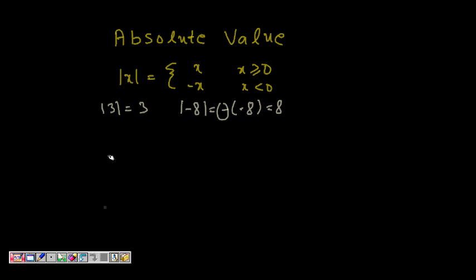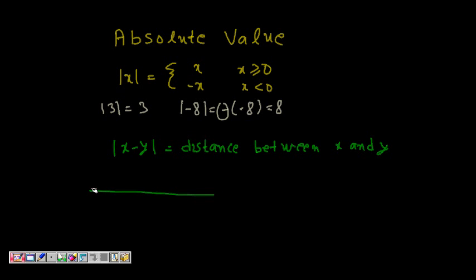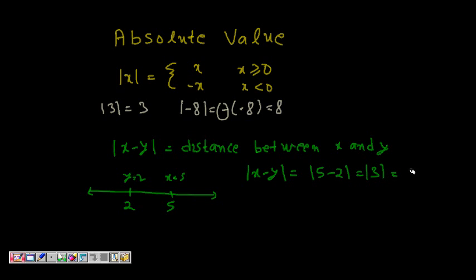If we are asked what |x - y| means, where x and y are both real numbers, it means the distance between x and y on the number line. For example, on the real number line we have 2 and 5. So |x - y| where x = 5 and y = 2 gives |5 - 2| = |3| = 3. This tells us the distance between 2 and 5 is 3.